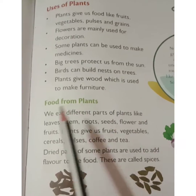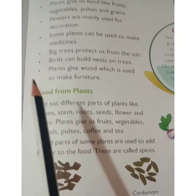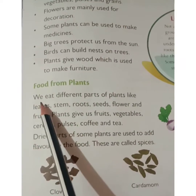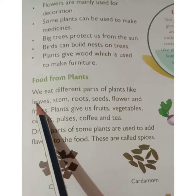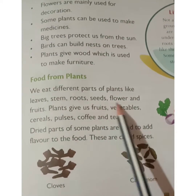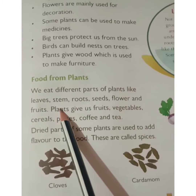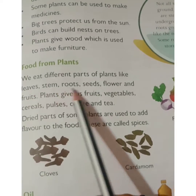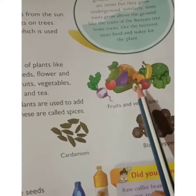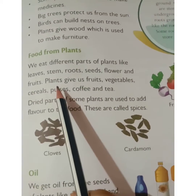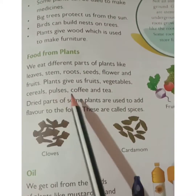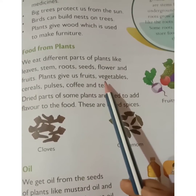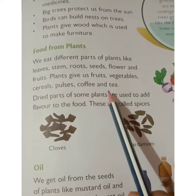Now let's look at the uses of plants in detail. First, food from plants — we eat different parts of a plant, such as leaves, stem, roots, seeds, flowers, and fruits. Plants also give us fruits, vegetables, cereals, pulses, coffee, and tea.